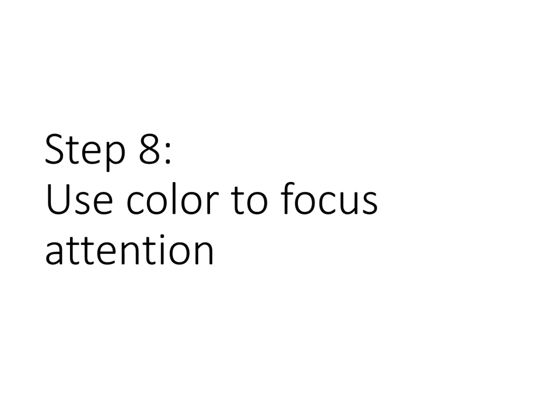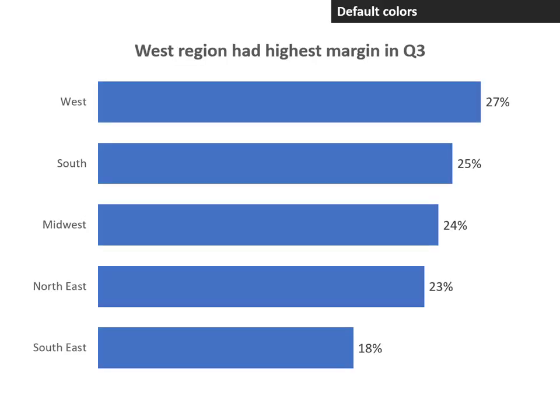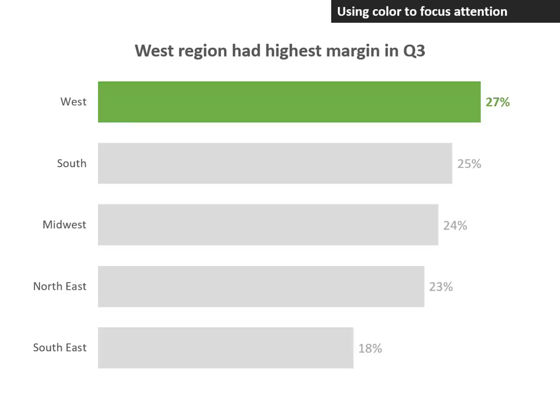Step eight: use color to focus attention. By default, all of the bars are the same color, so none of them stand out. By using a bold color for the one bar we want to stand out and a muted gray color for the other bars, we still have all the data on the chart, but the audience immediately looks at the one data point — the one bar that we want them to look at.